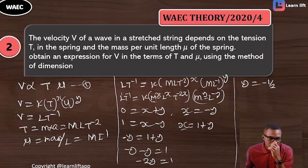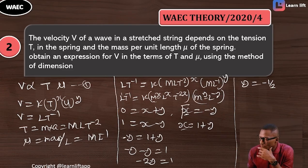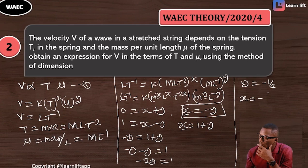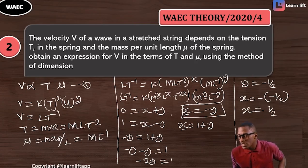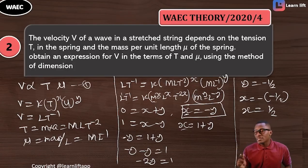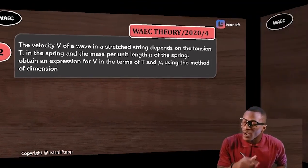Since x = −y, and y = −½, then x = −(−½) = ½. So x = ½ and y = −½. We have found our values of x and y.